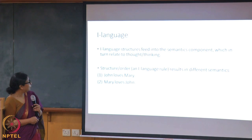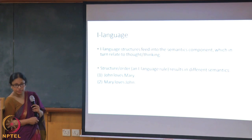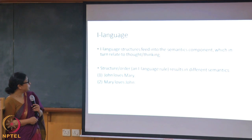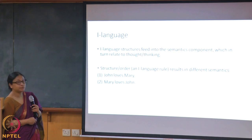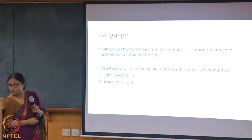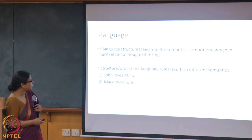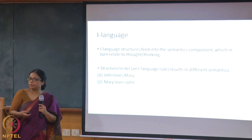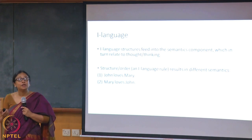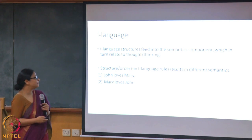Here is an example of how I language structures give you semantics. If you have 'John lost Mary,' depending on the position of the noun phrase, you will have a different semantics for John — he will be the experiencer and Mary will be the theme. But if you change the order, Mary becomes the experiencer and John becomes the theme. So I language structures are giving you the semantics as well as the ability to think differently.